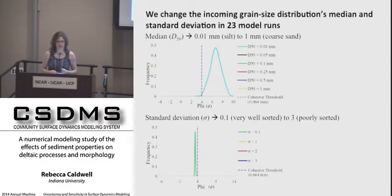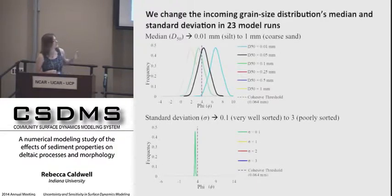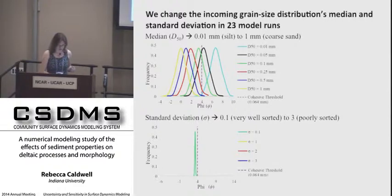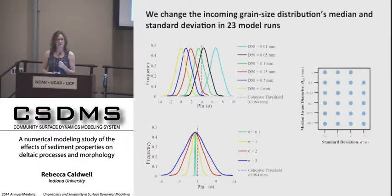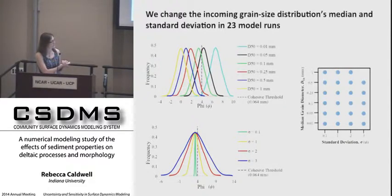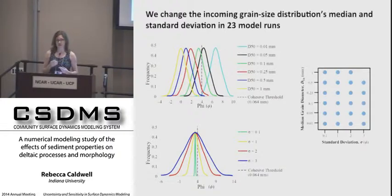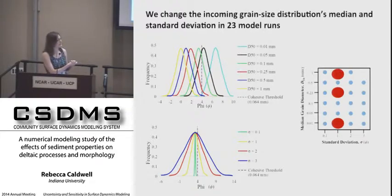We vary the incoming grain distribution by the grain size distribution's median and standard deviation. We start with a fine-grained sediment input and vary the median grain size from silt to coarse sand. For each median grain size, we additionally vary the standard deviation from very well sorted to poorly sorted. This results in 23 different modeled grain size distributions, shown here in parameter space. I'm going to start by showing movies of delta evolution for three different deltas representing a fine, intermediate, and coarse-grained delta.